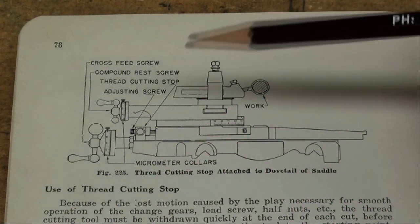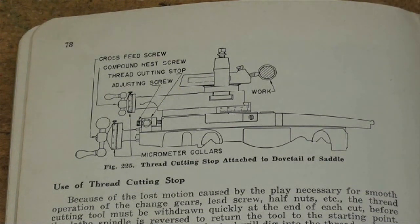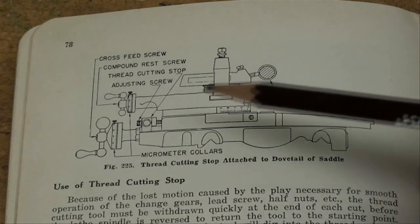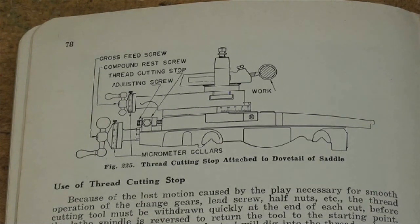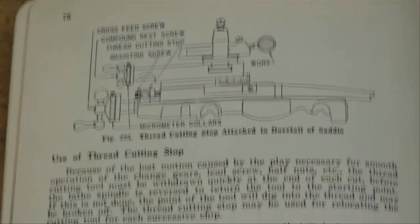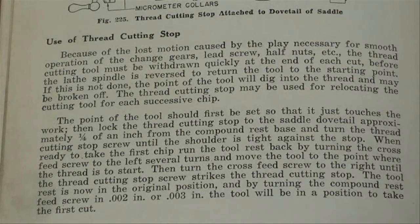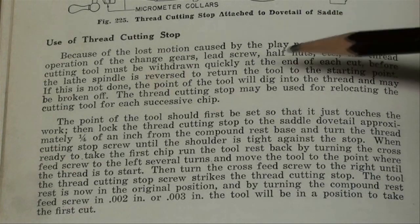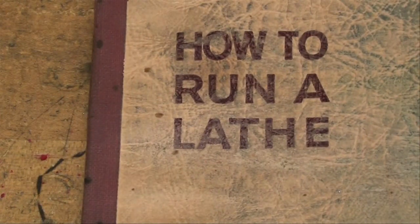Now this is what we're making—a thread stop. This is a page out of the South Bend How to Run a Lathe book, page 78 of this edition. We're making that little part that goes onto the dovetail of the cross slide. Pause your video and read that if you're interested in making one or want to know what the thread stop is used for.